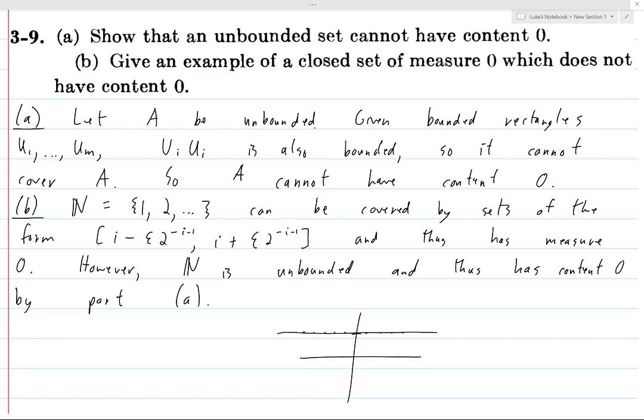You want to imagine that if you make your space bigger, then your sets can only get smaller. So for example, if you have a line segment in R that has measure equal to whatever the length of the line segment is, then if you put it into R2, then it doesn't have any width anymore, and so it will have measure zero. So if you embed a set into a larger space, its measure can decrease.